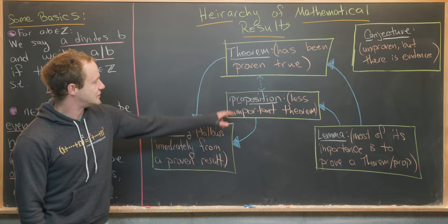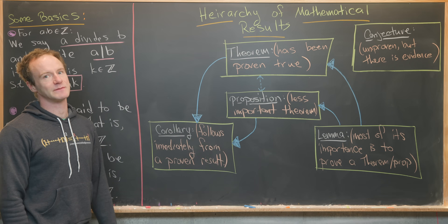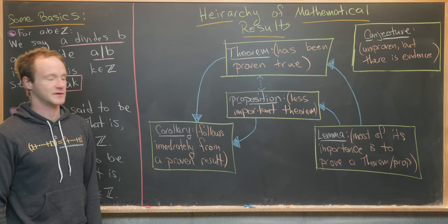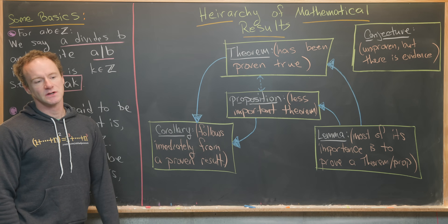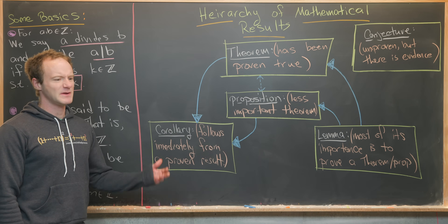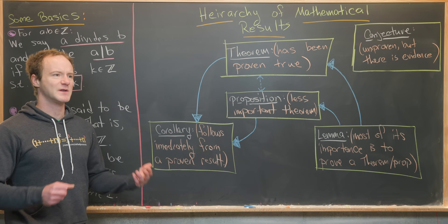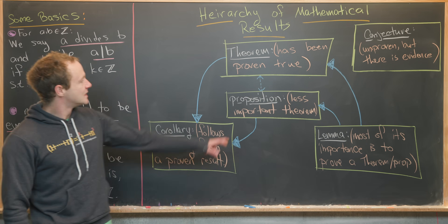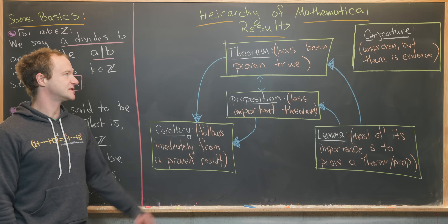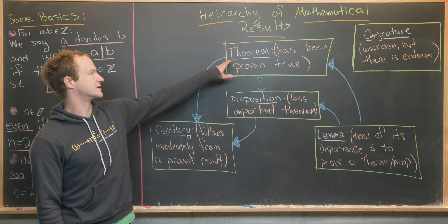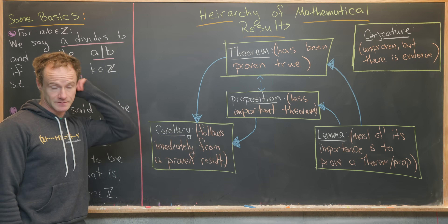Next, you've got propositions — sometimes called observations or other things. These are less important theorems: maybe almost good enough to be theorems, but not quite as interesting. I have a dotted line between theorems and propositions, because sometimes you'll use the result of a theorem to prove a proposition and vice versa.